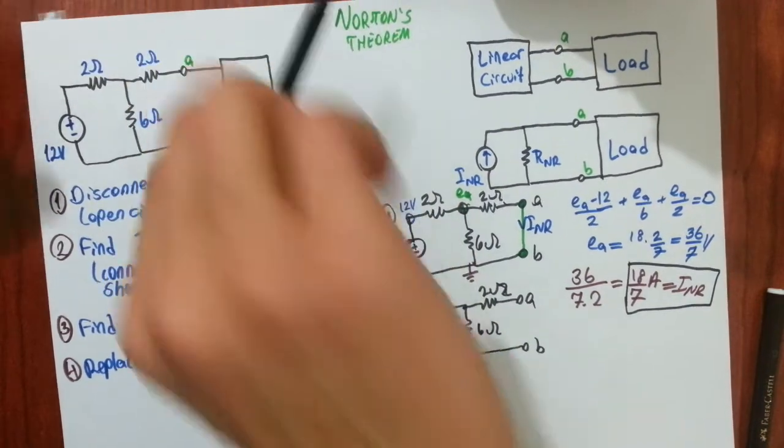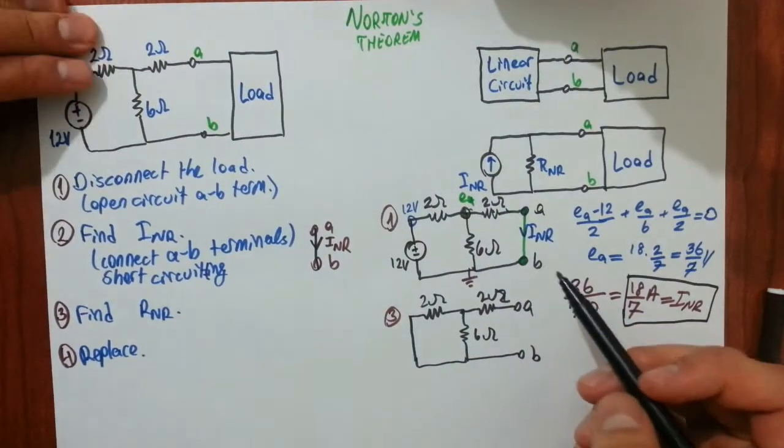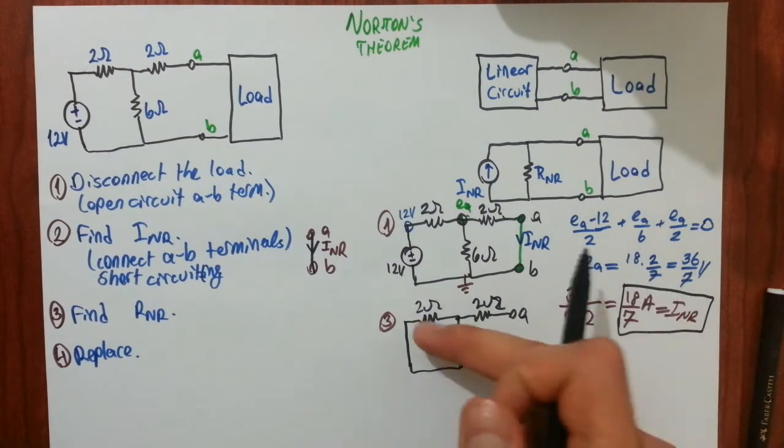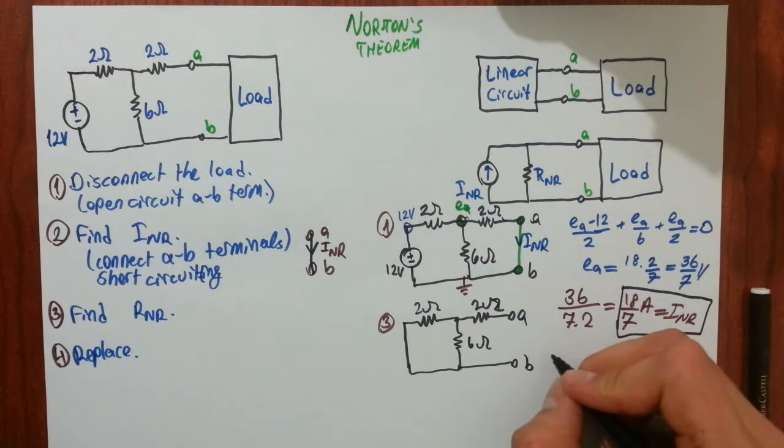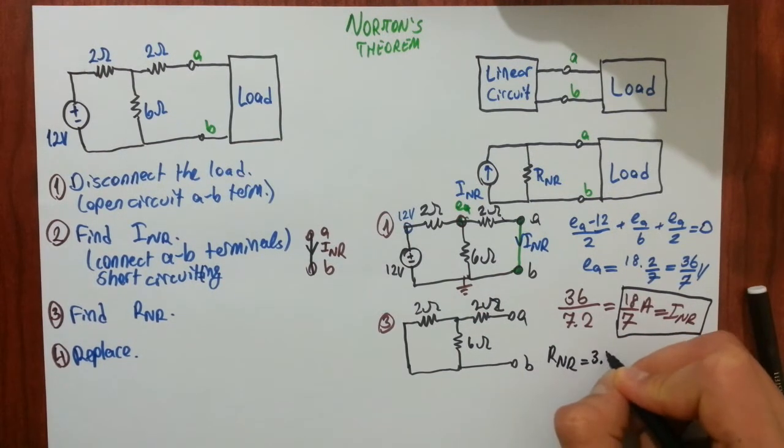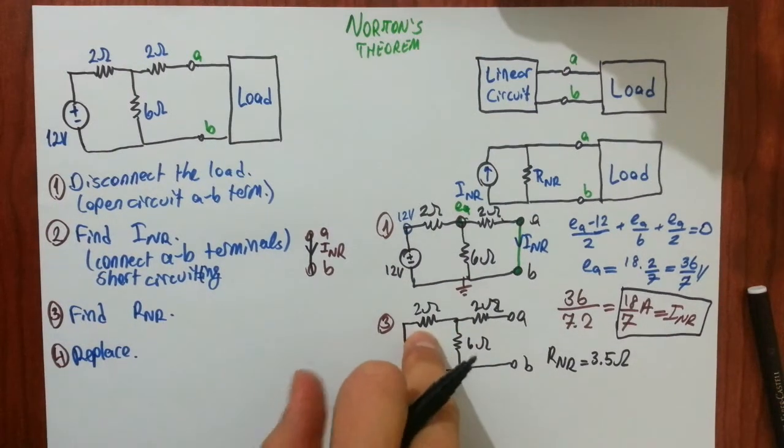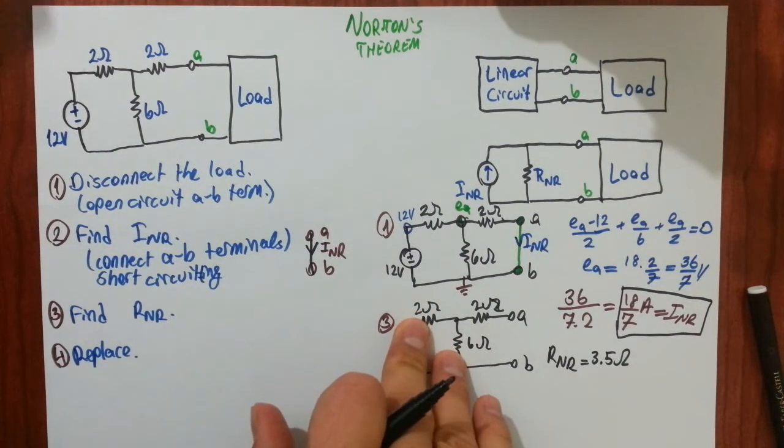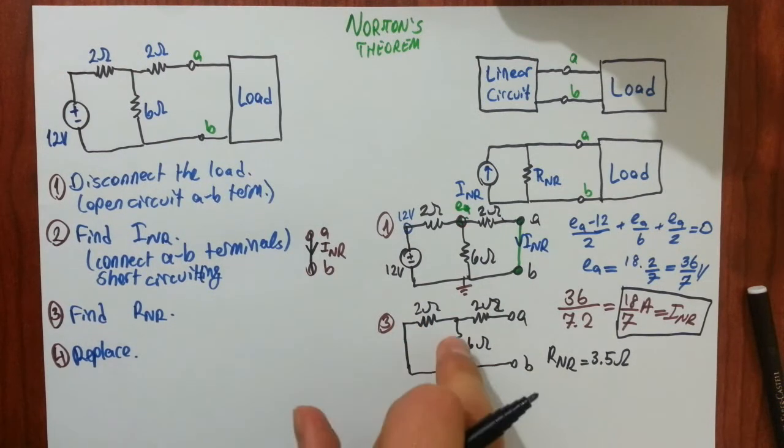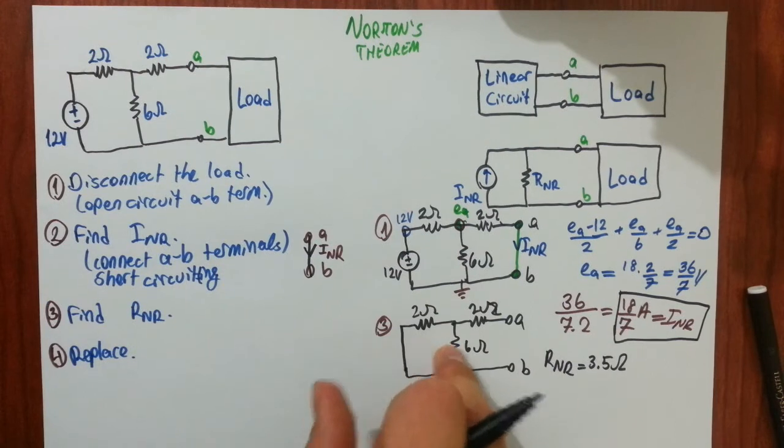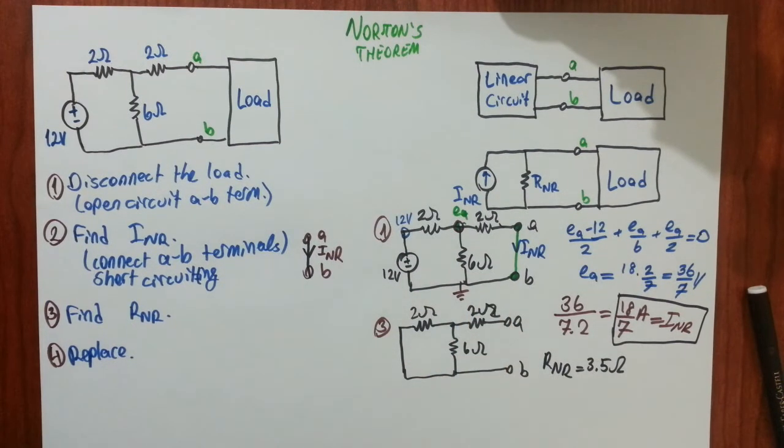A and B terminals are not connected. Then finding equal resistance here is very easy. RNR is simply 3.5 ohms. Notice these are in parallel. These are reduced into one single resistor with resistance 1.5 ohms. And these are in series then. That makes 3.5 ohms.